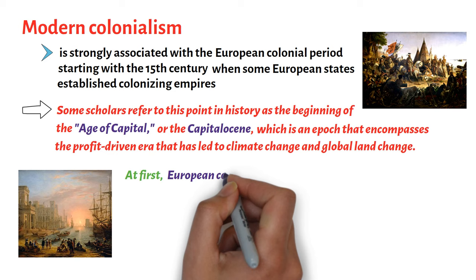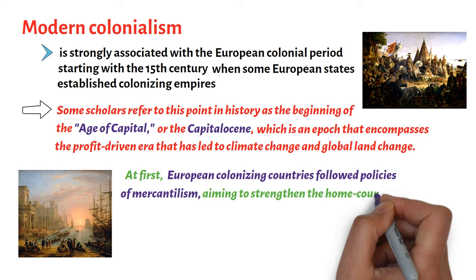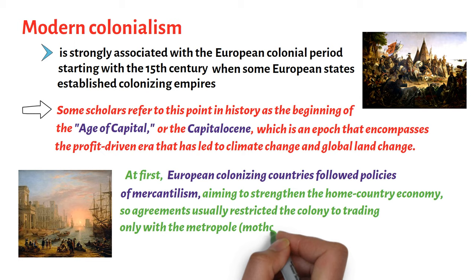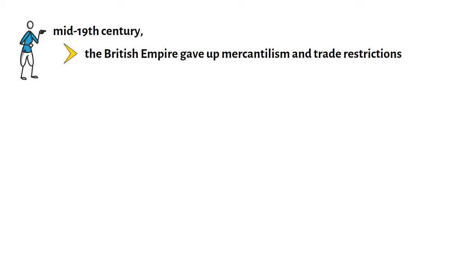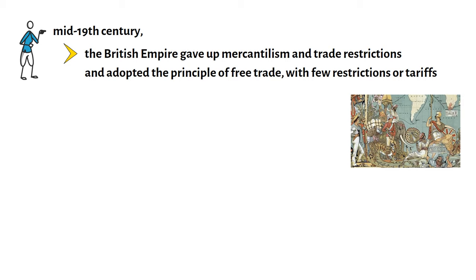At first, European colonizing countries followed policies of mercantilism, aiming to strengthen the home country economy, so agreements usually restricted the colony to trading only with the metropole or the mother country. By the mid-19th century, however, the British Empire gave up mercantilism and trade restrictions and adopted the principle of free trade, with few restrictions or tariffs.